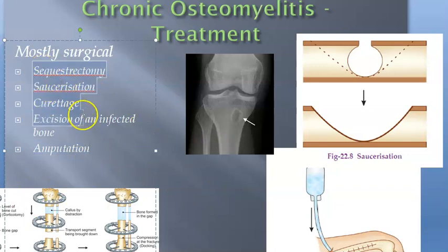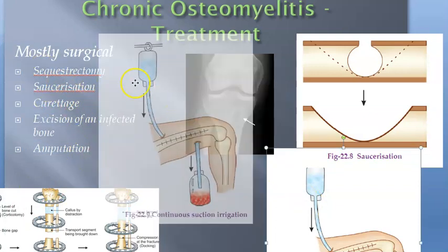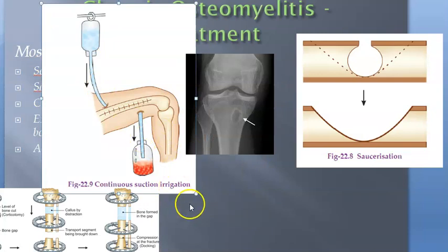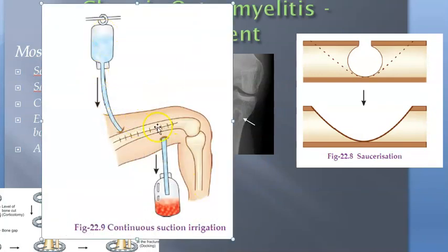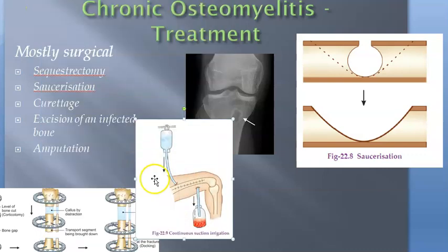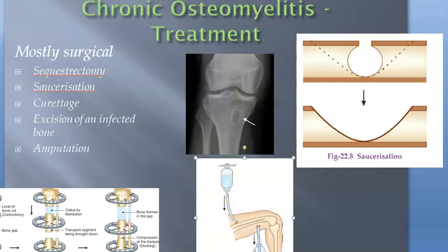Whenever you are talking about drainage, there is a technique called continuous suction irrigation. They irrigate and remove infected material so it can be drained better. The irrigating fluid contains antibiotics and a detergent, and they irrigate the medullary canal for 4 to 7 days. This is yet another treatment for chronic osteomyelitis.